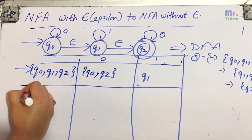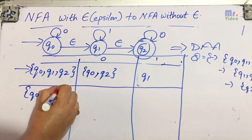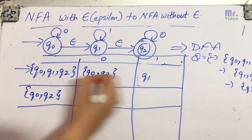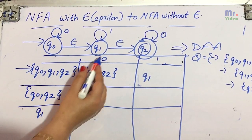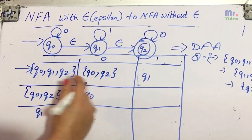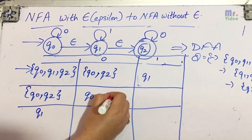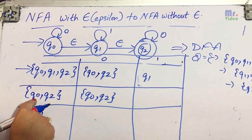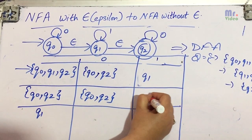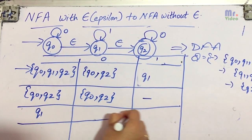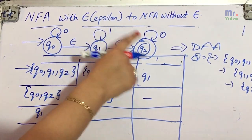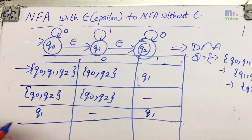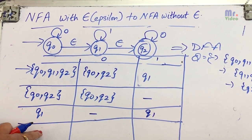The new states found are {q0, q2} and {q1}. For {q0, q2} with 0: q0 with 0 → q0, q2 with 0 → q2, so the result is {q0, q2}. For {q0, q2} with 1: q0 with 1 → no transition, q2 with 1 → no transition, so there is no transition. For {q1} with 0: q1 with 0 → nothing. For {q1} with 1: q1 with 1 → q1. No new states are found, so we stop.